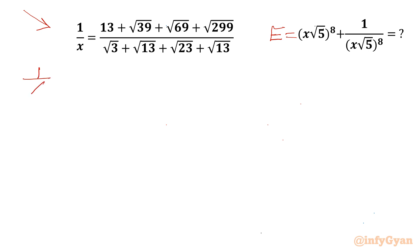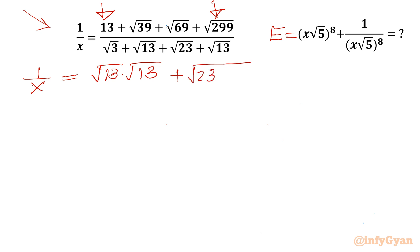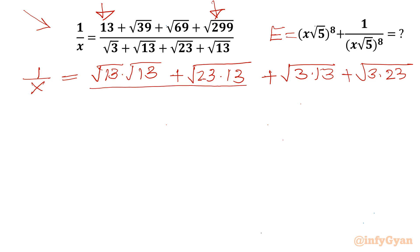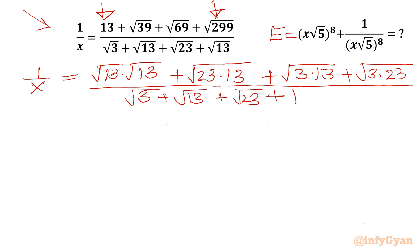Now I will write 1 over x equal to 13 and √299. I will write 13 as √13 times √13. Then √299 we can write as 23 times 13 — you can check 23 times 13 is 299. Plus √39, which we can write as 3 times 13, and √69 is 3 times 23. The denominator is √3 + √13 + √23 + √13.